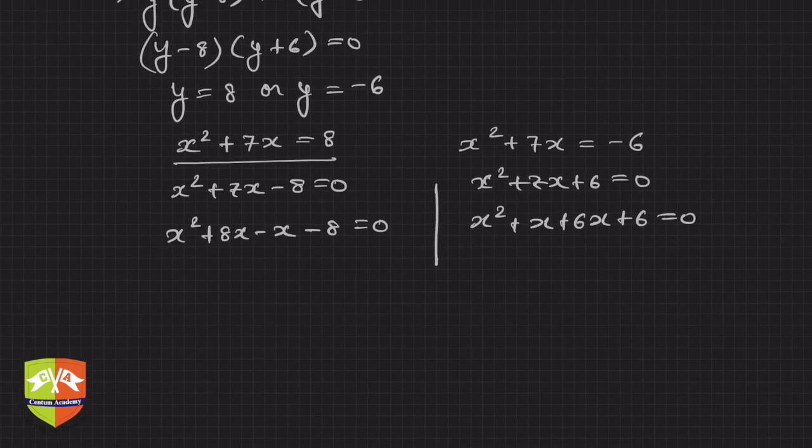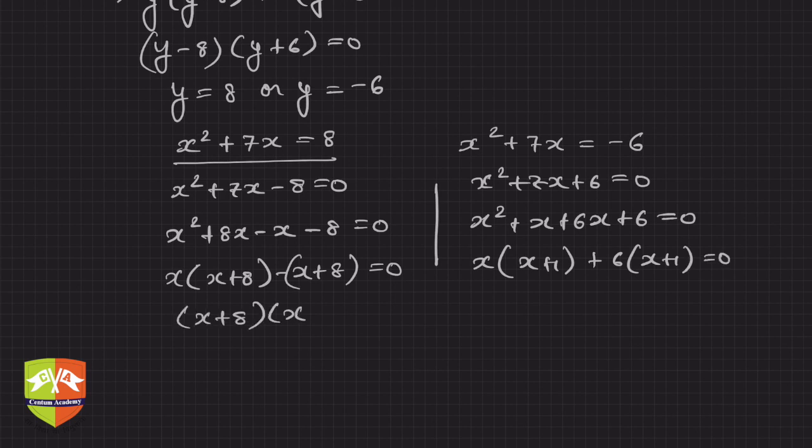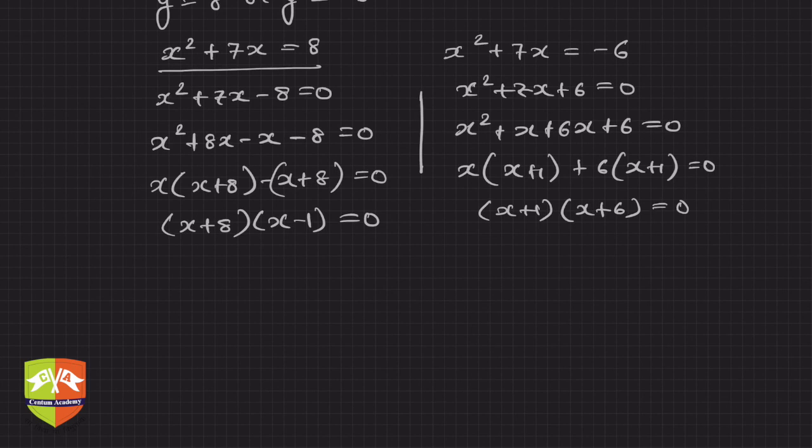So x times (x+8) minus 1 times (x+8) equals 0, and hence this is nothing but x times (x+1) and 6 times (x+1) equals 0. That means this is nothing but (x+8)(x-1)=0 and this becomes (x+1)(x+6)=0.